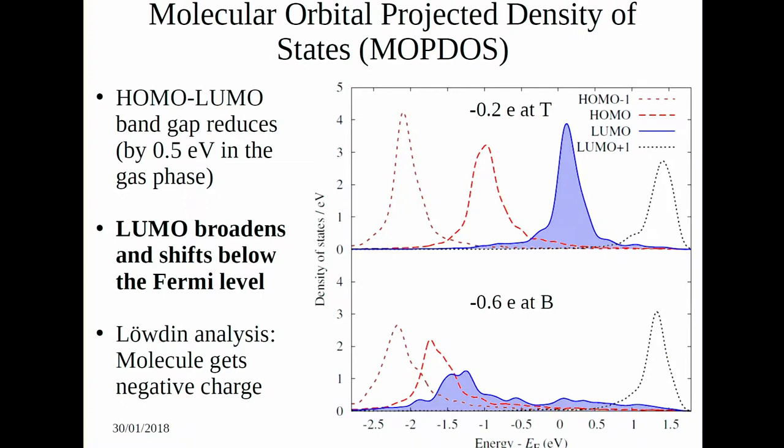On the surface, looking at the molecular orbital projected density of states, the LUMO is heavily hybridized and the main peak lies below the Fermi level at the bridge site. At the top site — where the molecule is planar and it is the highest stable planar site — the LUMO lies at the Fermi level.